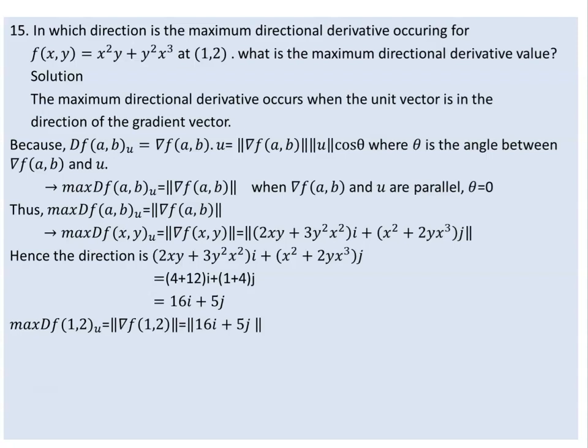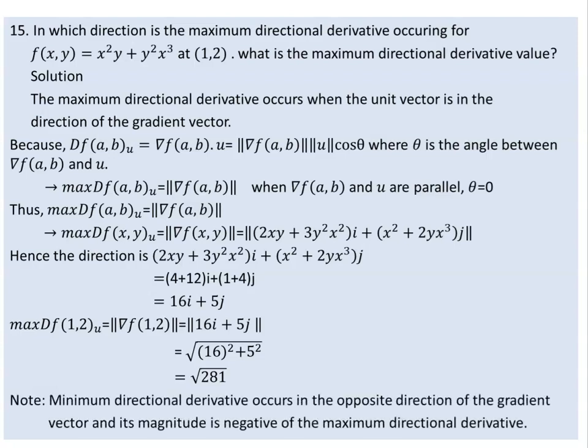The magnitude of the maximum directional derivative is the square root of the sum of the gradient components squared. For the minimum directional derivative, we consider the opposite direction of the gradient vector. The minimum value may be negative because we have 180 degrees between the vectors, and cosine of 180 is minus one, which is the least value of cosine. This minimum is achieved when we consider a vector in the opposite direction to the gradient.